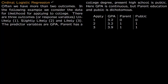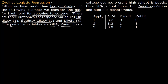We talk about ordinal logistic regression, where we have more than two outcomes. Consider data for likelihood of applying to college: there are three outcomes - the person is unlikely to apply (1), slightly likely to apply (2), or very likely to apply (3). The predictor variables are GPA, which is continuous, parent education (binary - whether the parent has a college degree), and whether the high school is public (binary).